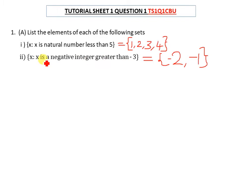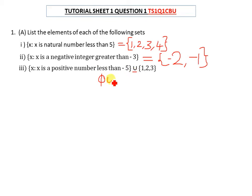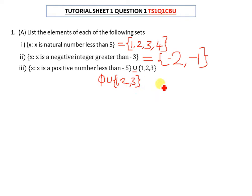That's the solution for the second question. The third question asks: x is a positive number less than negative five. Do we have a positive number which is less than negative five? No, we don't — so this is just an empty set. Then we take the union of that empty set with {1, 2, 3}. When you combine nothing with any set, you simply get that same set, so the answer is {1, 2, 3}.